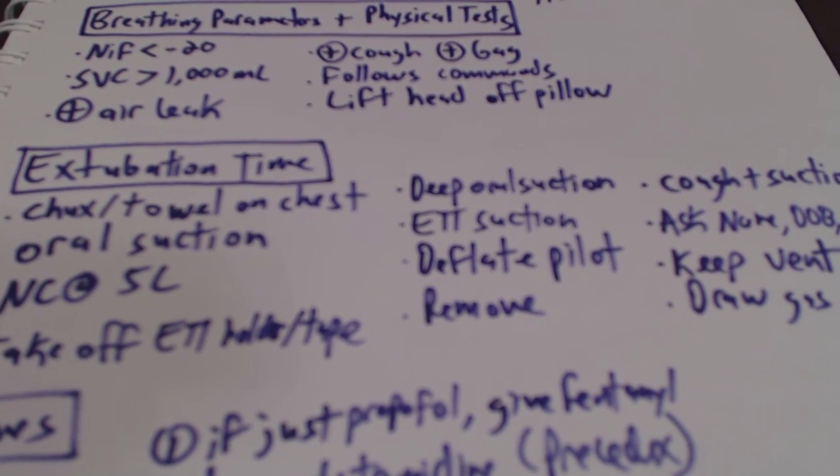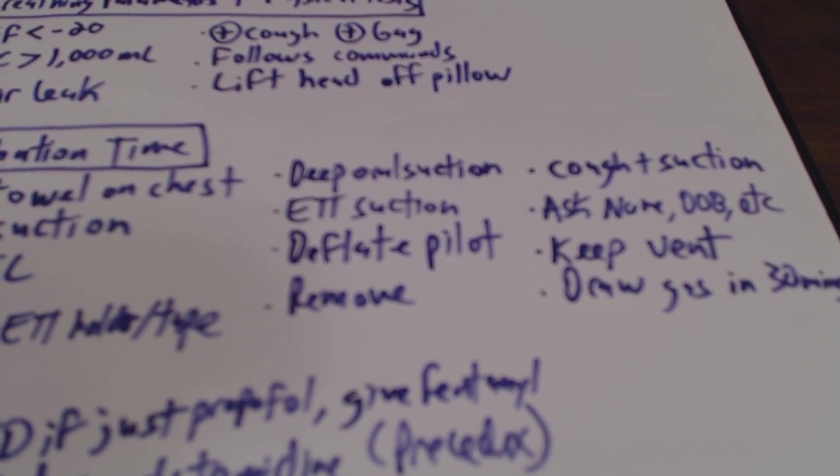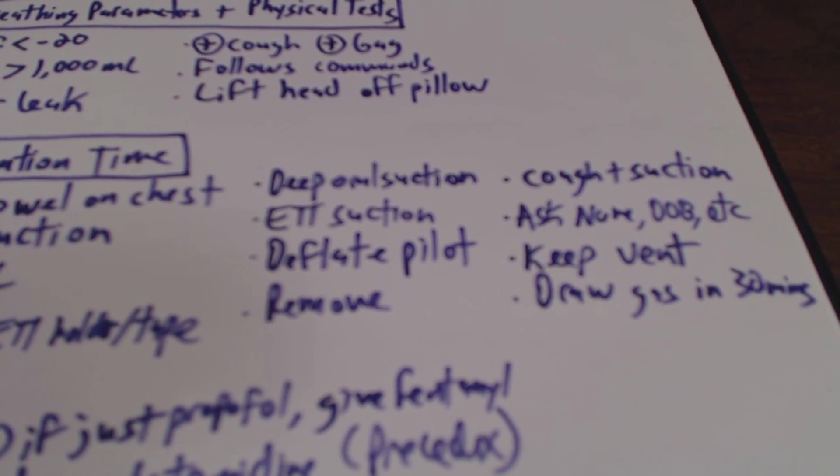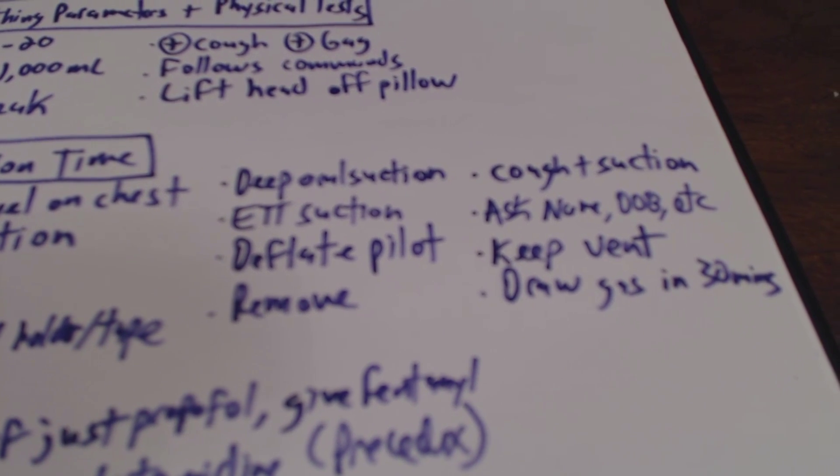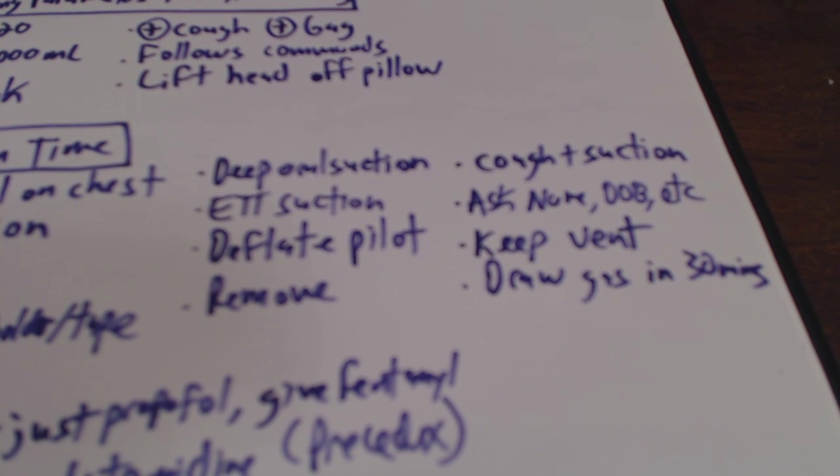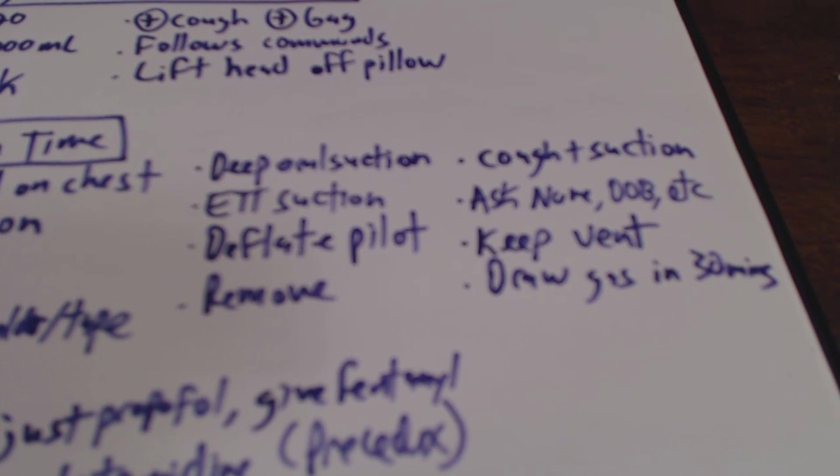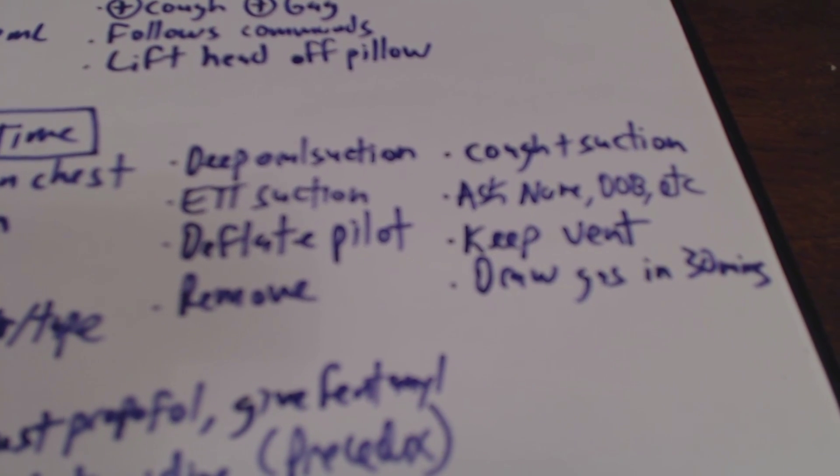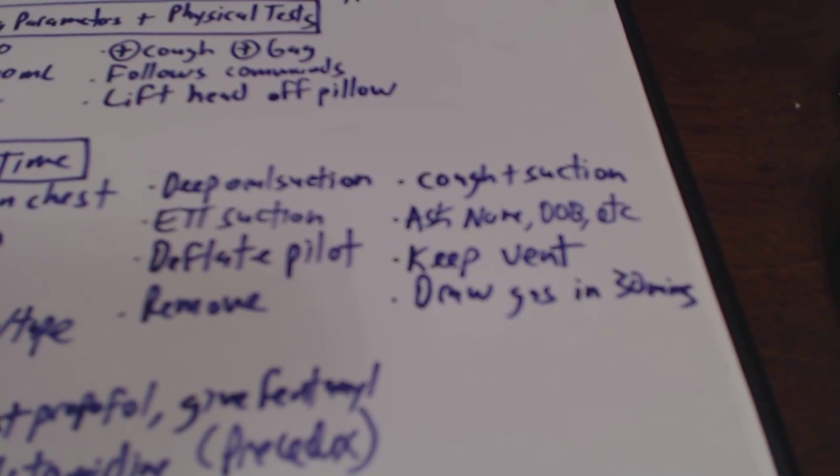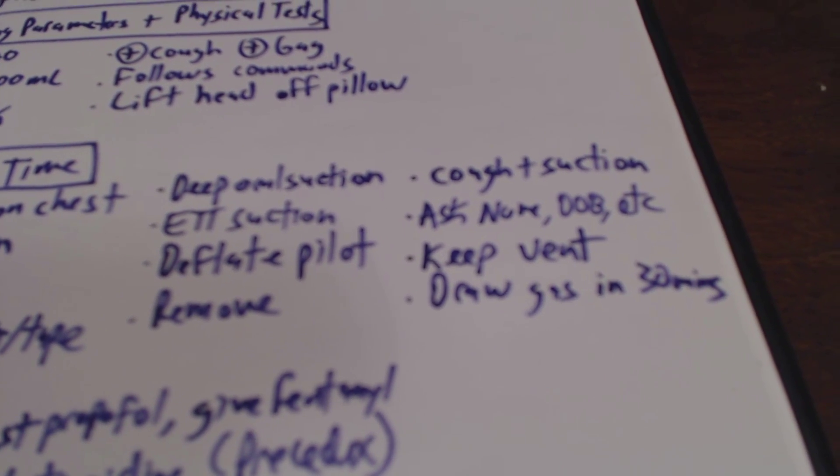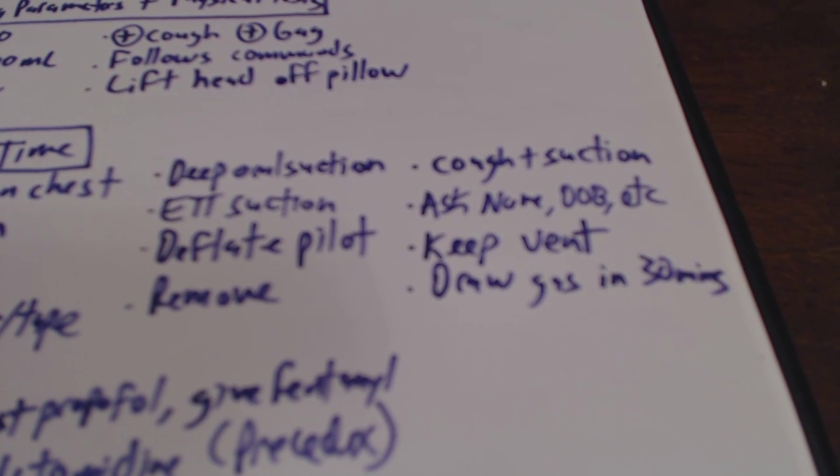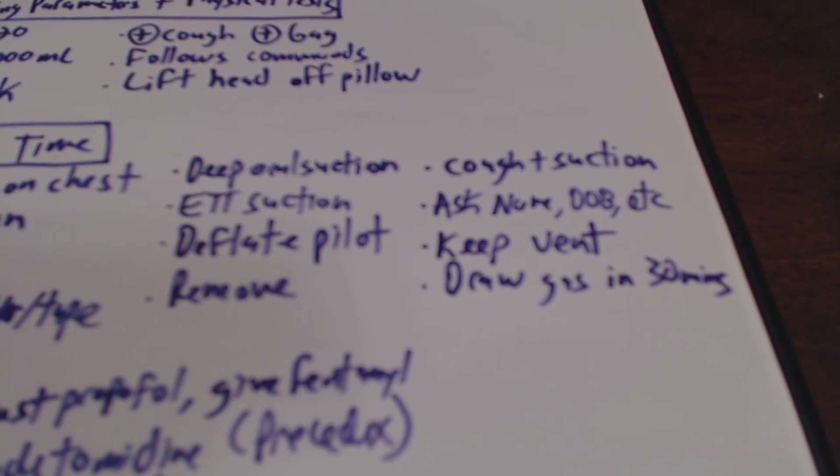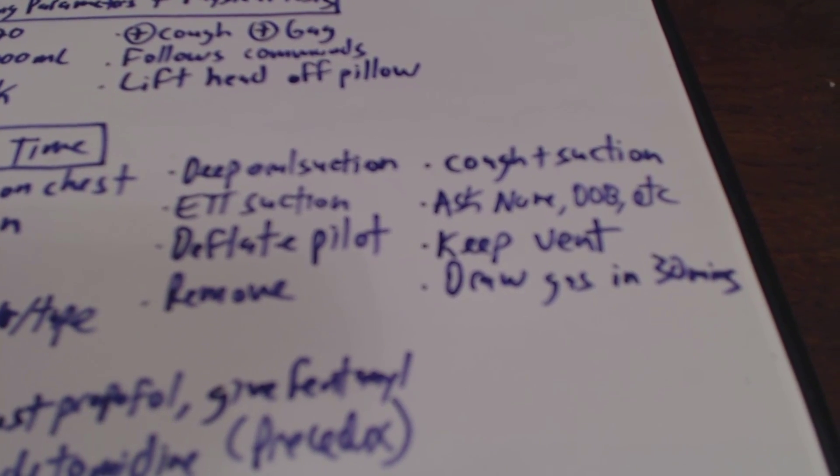Do some deep oral suction, also do one last endotracheal tube suction, we'll deflate the pilot tube, and then we'll finally remove the endotracheal tube. We'll want to prompt the patient to cough really hard, and we'll suction whatever gunk comes up. We don't want that going down. And after we extubate, we're going to want to make sure to ask the patient their name, date of birth, what brought them in, and also what procedure they had done, just to do your standard alert and oriented questions. Some nurses and some respiratory therapists like to keep the vent in the room, just in case, and then 20 to 30 minutes post-extubation, it's good for them to draw a gas.